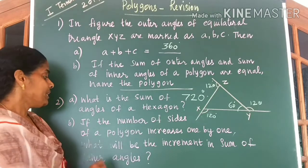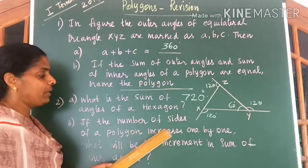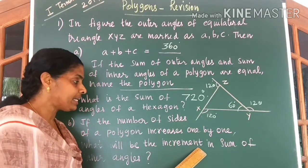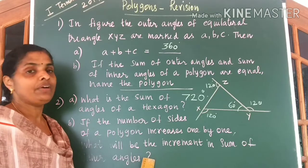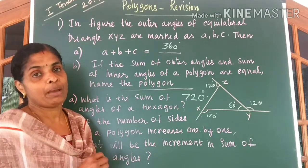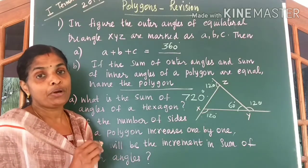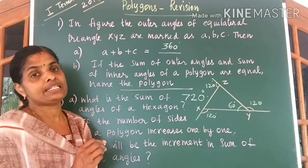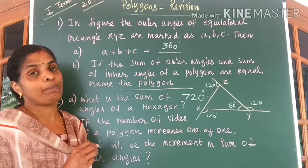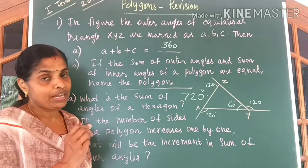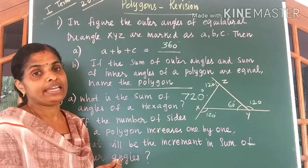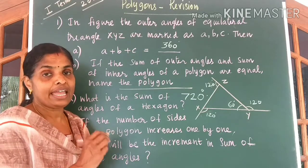Second question: if the number of sides of a polygon increases one by one, what will be the increment in the sum of inner angles? As the number of sides of a polygon increases, the number of triangles increases by one. So the increment in the angle would be 180 degrees — when one side increases, the angle of the polygon increases by 180 degrees.